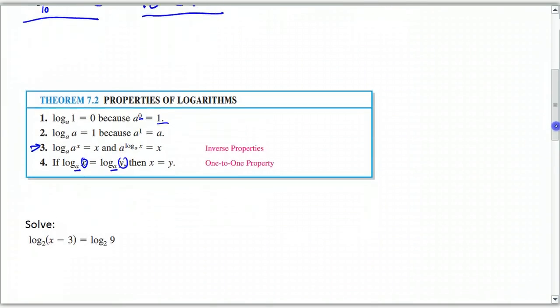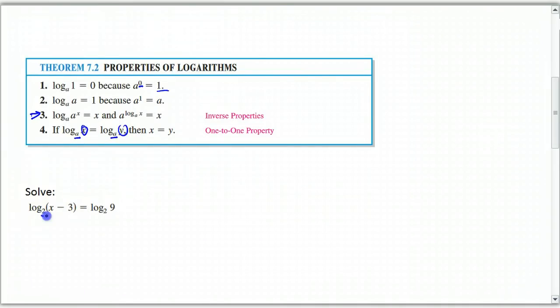Alright, so, if I asked you to solve this, notice that this log on the left is base 2, this log on the right is base 2. We can use the 1 to 1 property and just say that X minus 3 has to equal 9, so X is 12.